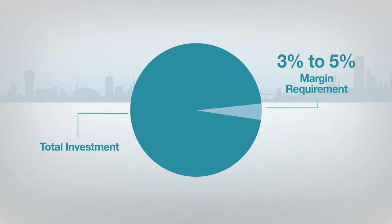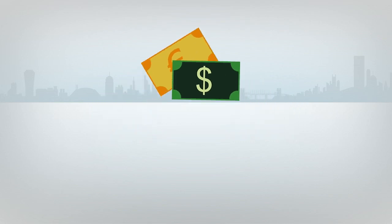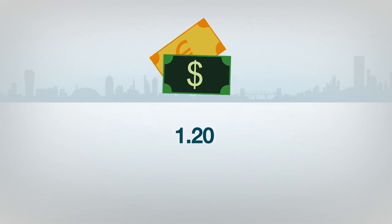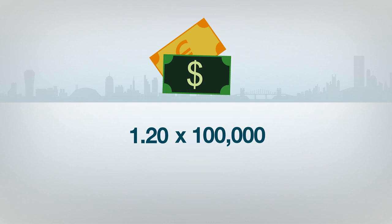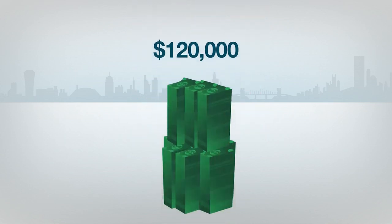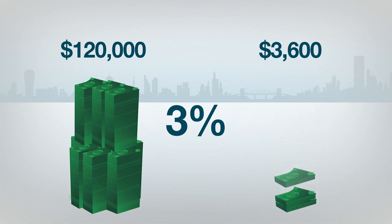To understand how margin is calculated, let's look at an example using the Euro versus US dollar pair. Say this pair was trading at 1.20 and an investor wanted to buy a standard lot, or 100,000 units. The total cost of the trade would be $120,000. However, the investor doesn't have to pay that full amount — instead, she pays the margin requirement. If the margin requirement was 3%, then 3% of $120,000 is $3,600. That's the amount the investor needs in her Forex account to place this trade.